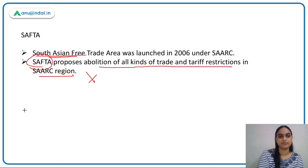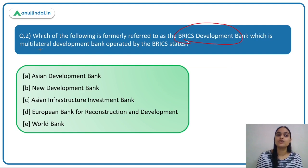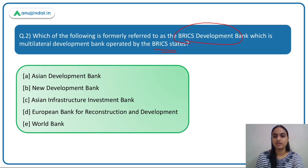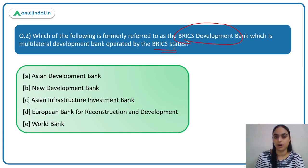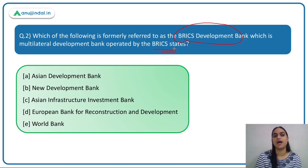The second question asks: which of the following was formerly referred to as the BRICS Development Bank — a multilateral development bank operated by the BRICS states? First we need to discuss what BRICS is all about, and then identify which bank was formerly known as the BRICS Development Bank and what role it plays in the economy.